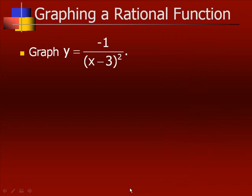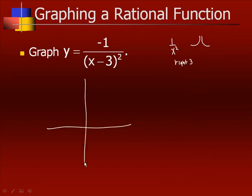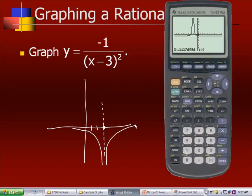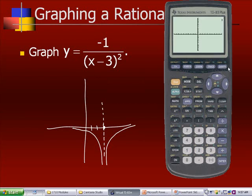To graph negative 1 over (x minus 3) squared: remember the negative means the graph is flipped upside down, so we're still looking at the 1 over x squared shape but reflected. The x minus 3 means we shift it to the right three places, moving the origin over 1, 2, 3. Because of the negative, both sides of the graph come downward. On the calculator: y equals negative 1 divided by (x minus 3) squared. Pressing graph, we get our result.